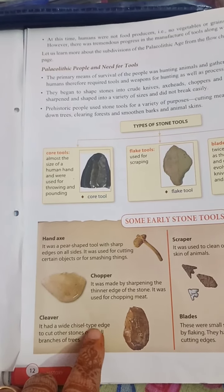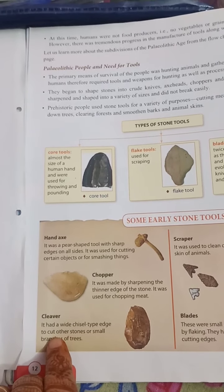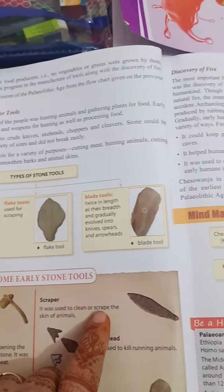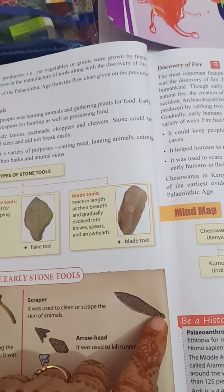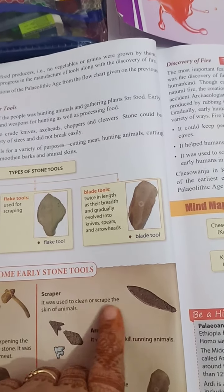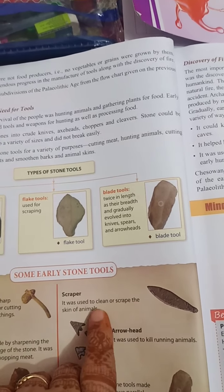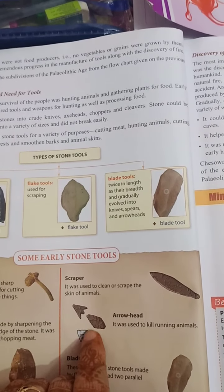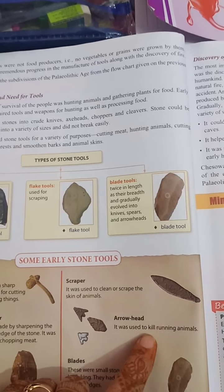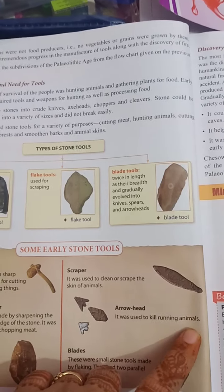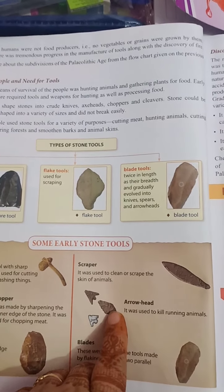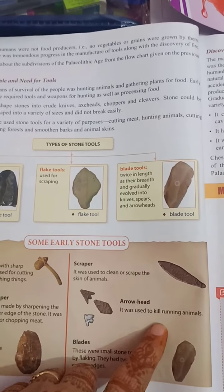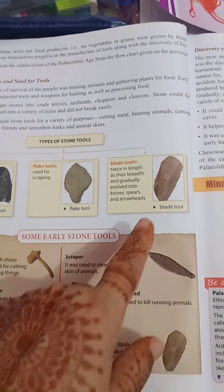The cleaver had a wide chisel-shaped edge used to cut other stones or small branches of trees. Next is the scraper — it is like a knife and was used to clean or scrape the skin of animals. Next are arrowheads — all three arrowheads shown were used to kill running animals. They made arrows with these and killed running animals.